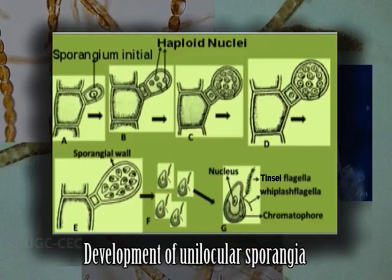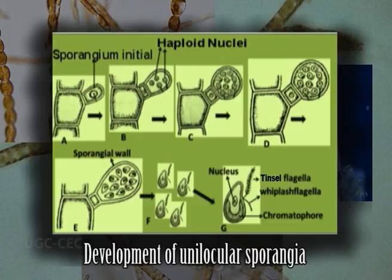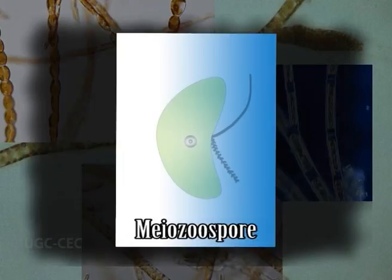Development of unilocular sporangia: The unilocular sporangia develop from the apical cell of the lateral branch, which increases considerably in size to take on a globose or ellipsoid shape and functions as the sporangial initial. Simultaneously, the number of chromatophores also increases within the developing sporangium. The diploid nucleus of this initial cell first undergoes meiosis followed by several mitotic divisions to produce 32 to 64 haploid daughter nuclei. There is then cleavage of the cytoplasm to form as many uninucleate daughter protoplast units with single chromatophores and haploid nucleus.